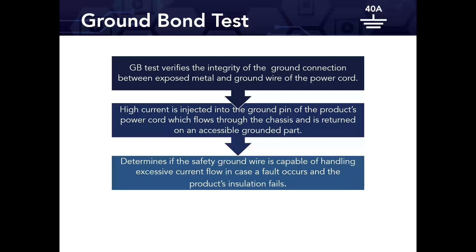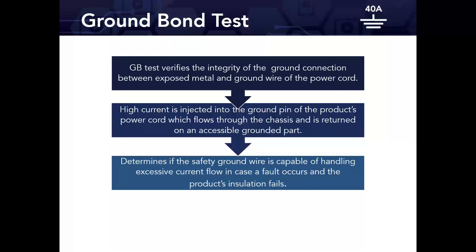The ground bond test verifies the integrity of the ground connection between exposed metal and the ground wire of the power cord. High current is injected into the ground pin of the product's power cord, flows through the chassis, and is returned on an accessible grounded part. We're confirming a continuous path from the ground prong — once plugged into the wall — to all accessible metal chassis parts.